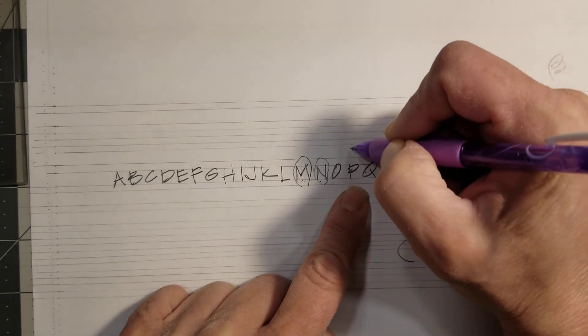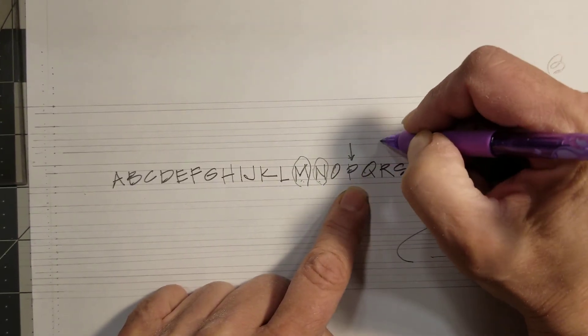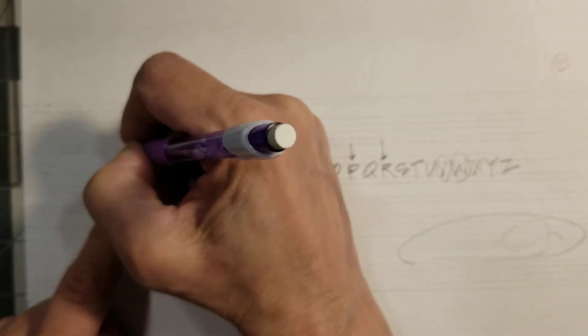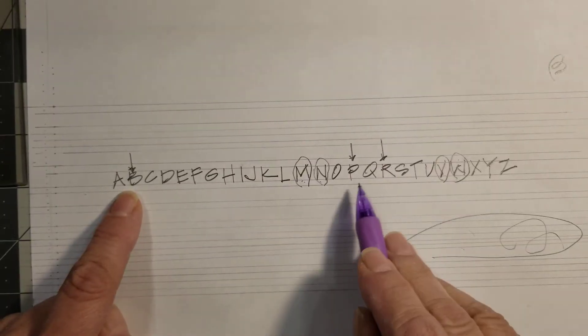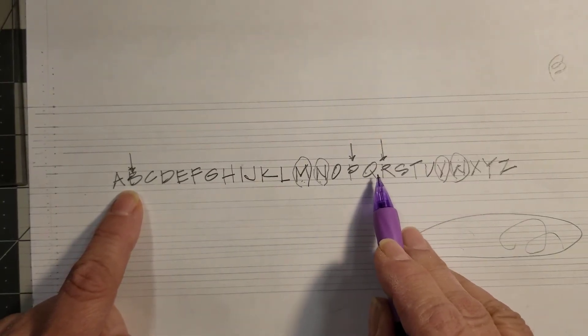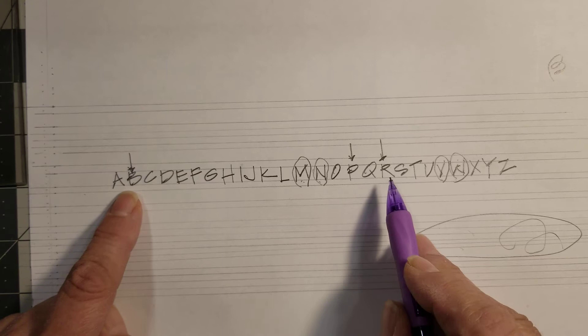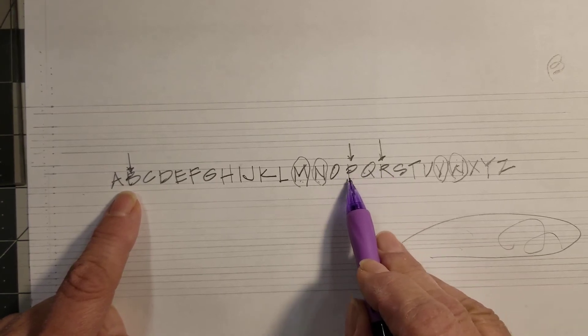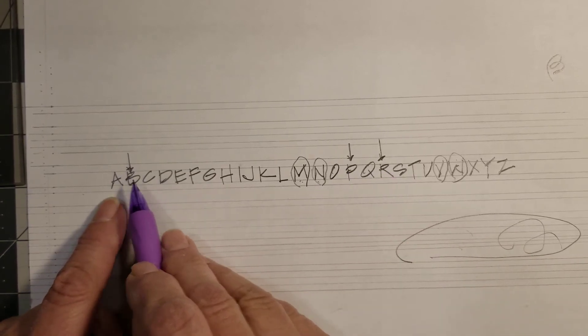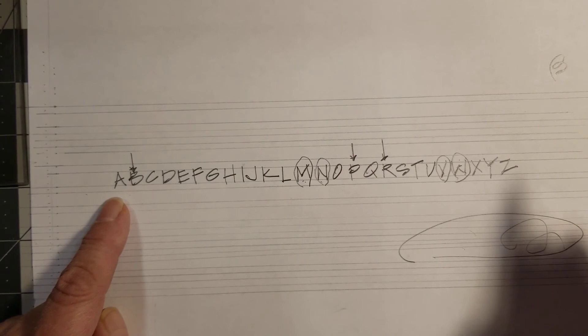Okay, so the other similar forms that we have as far as letter forms go is we have a P and R and a B, which all have the letter P in them. So you want to make sure that your top shape is consistent in all of your forms.